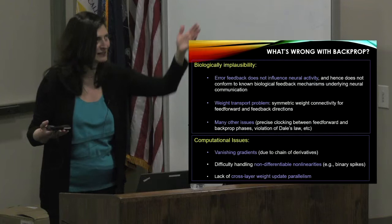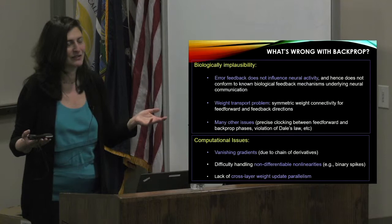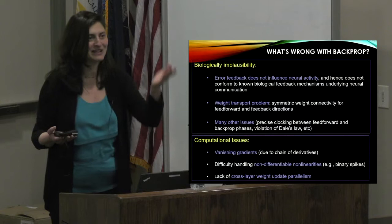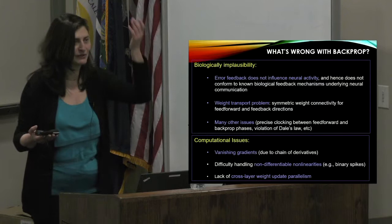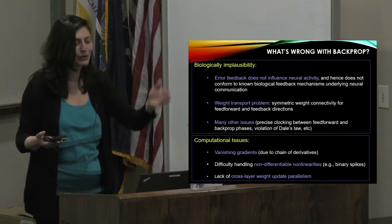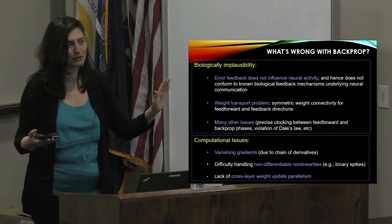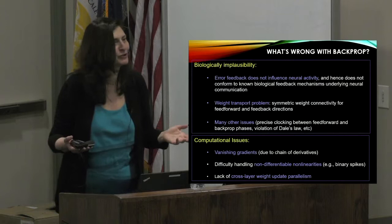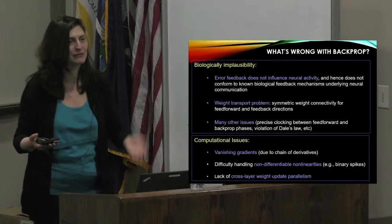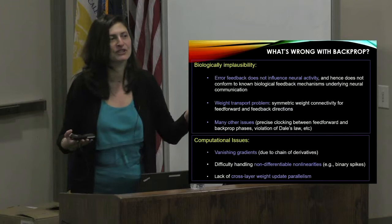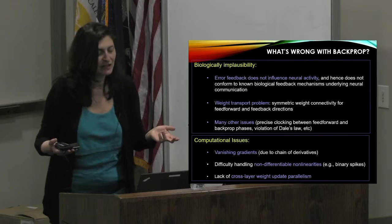Classical biological plausibility complaints about backpropagation: you don't model neural activity, propagation only involves synaptic weights, neural activity is deterministic, and there is the weight transport problem where forward and backward pass connections must be the same. For AI researchers, computational issues matter even more: vanishing gradients still occur in deep or recurrent networks due to the chain of derivatives, and non-differentiable nonlinearities like binary activations cannot be handled directly.